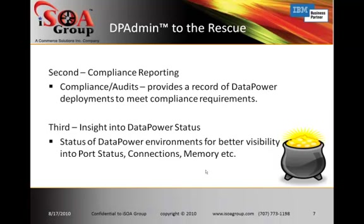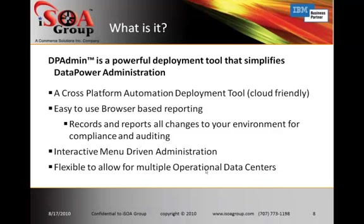The next important feature is compliance reporting — you need to be able to meet compliance requirements for things like Sarbanes-Oxley, HIPAA, and those types of things. The third thing is insight into DataPower's status: the DP Admin tool can provide you with a command line runtime status check of different things like your port status, your connections, and your memory. So what is DP Admin? It's a powerful deployment tool that simplifies your DataPower administration. It's a cross-platform tool — you can deploy it on Windows, Linux, or AIX. It's cloud-friendly. It has an easy-to-use browser-based reporting tool which records and reports all the different changes to your environment for your compliance and auditing. It provides interactive, menu-driven administration, and it's flexible to allow for multiple operational data centers — you can have it working across several environments.